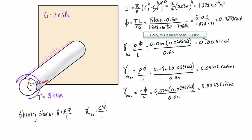What you should notice is a linear relationship in shearing strain that correlates to radial distance from the axis. When we doubled the radial distance from 0.01 to 0.02 meters, the shearing strain doubled. When we tripled it from 0.01 to 0.03 meters, the shearing strain tripled.